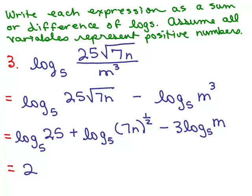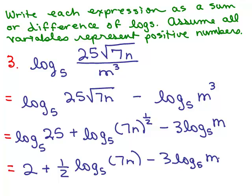Now we've got to deal with this. What do we do with this, 7n to the 1 half? Well, I could put the 1 half out in front, and then I have log base 5 of 7n. Now, you have to put parentheses around the 7n. Actually, you don't have to, but it's a good idea. I better say it that way.